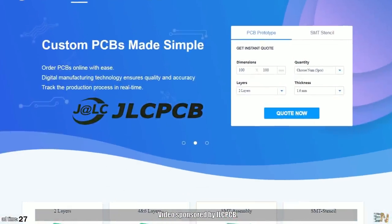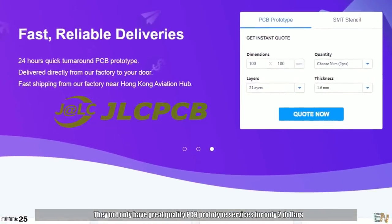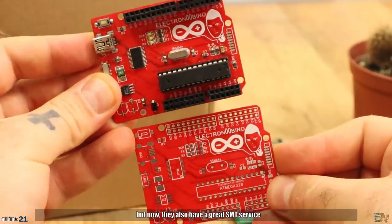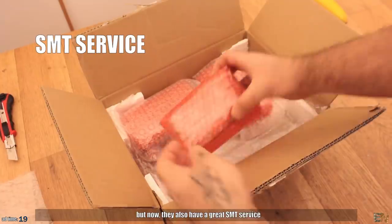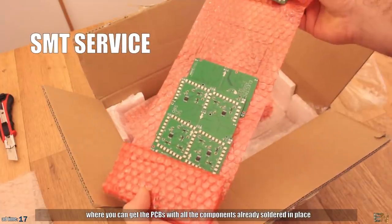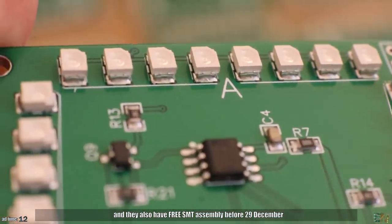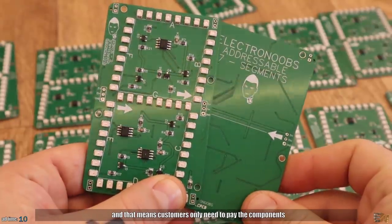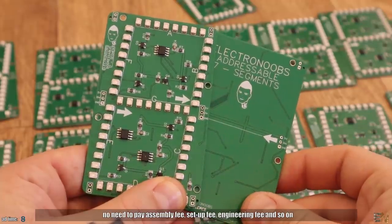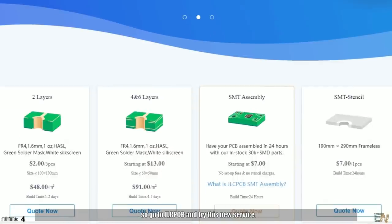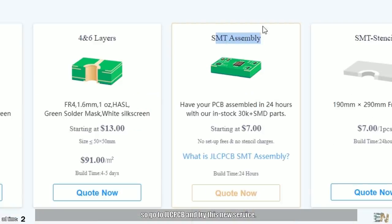Video sponsored by JLCPCB. They not only have a great quality PCB prototype service for only $2, but now they also have a great SMT service where you can get the PCBs with all the components already soldered in place. They also have free SMT assembly before 29th December, which means the customer only needs to pay for the components. No need to pay assembly fees, setup fees, engineering and so on, so go to jlcpcb.com and try this new service.